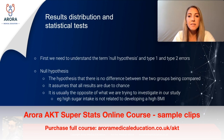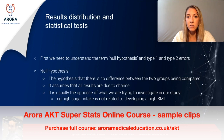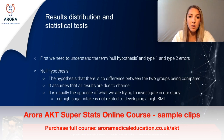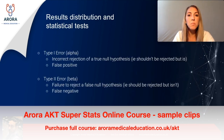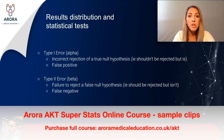A null hypothesis is the hypothesis that there is no difference between the two groups being compared — it assumes all results are due to chance and is usually the opposite of what we're investigating. An example would be: high sugar intake is not related to developing a high BMI. A type one error, also known as alpha, is when we incorrectly reject a null hypothesis when it's actually true — we reject it when we should accept it, resulting in a false positive.